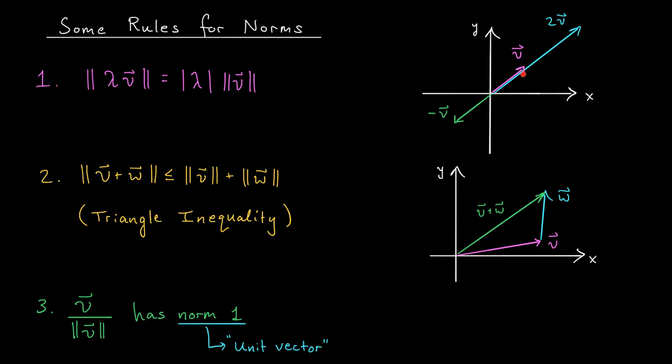If we multiply V by 2, we would expect it to be twice as long. What if instead we multiply it by a negative number, like, for example, minus 1? Well, according to our formula here, the length of minus V should be the absolute value of minus 1, which is 1, times the length of V. It says that the length of V and minus V are the same. And that makes sense. Minus V is just pointing in the opposite direction.